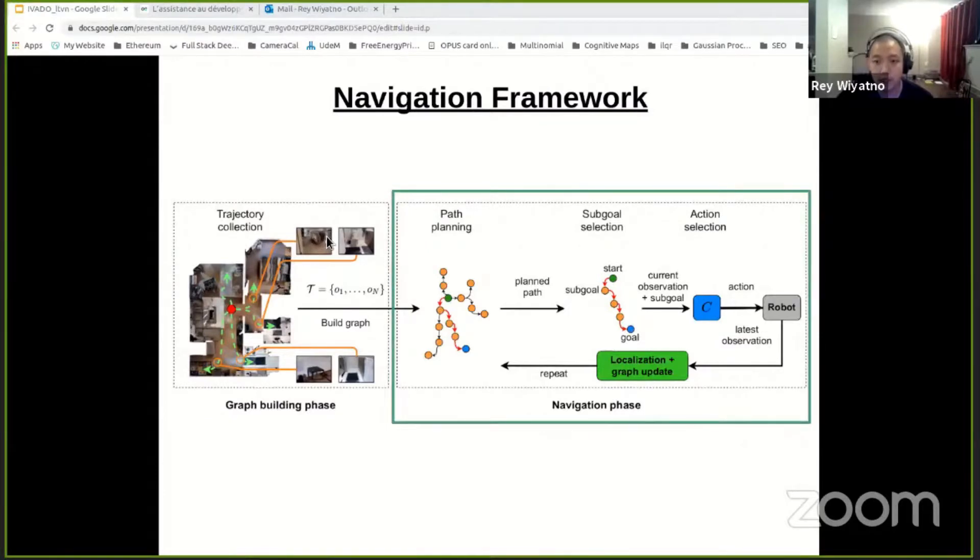And in the navigation phase, the agent is given a query in the form of a target image, localizes itself on the graph, and plans a path to reach the goal from the planned path, and then it picks a sub-goal and predicts what action to take in order to reach the sub-goal.